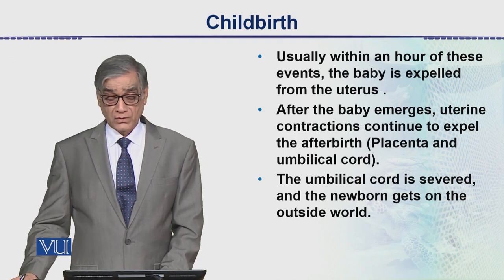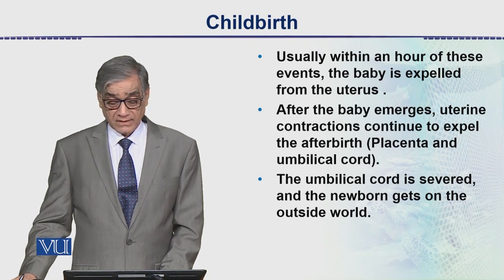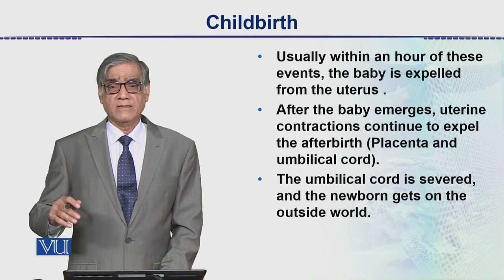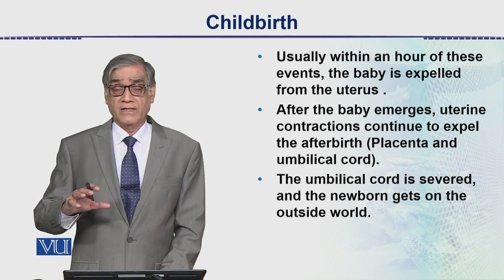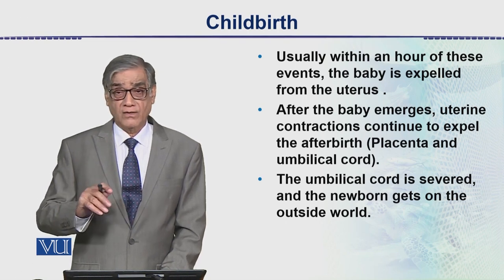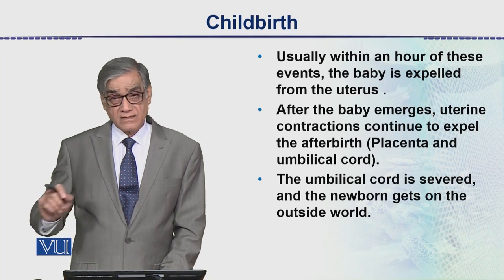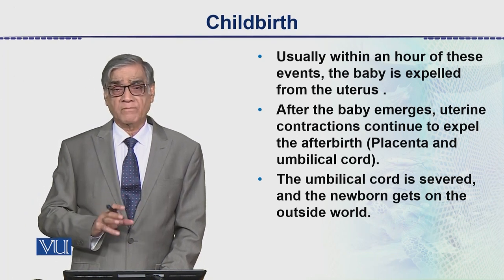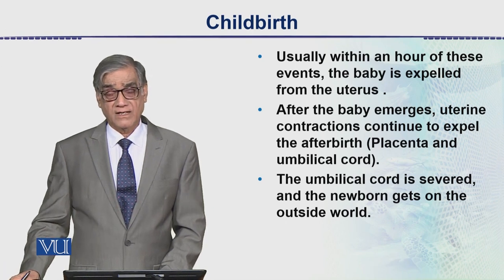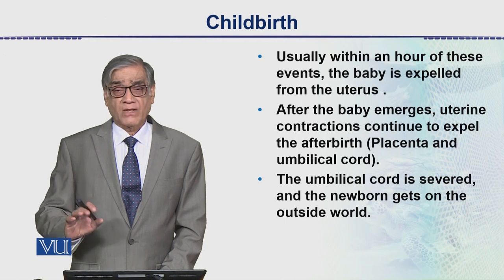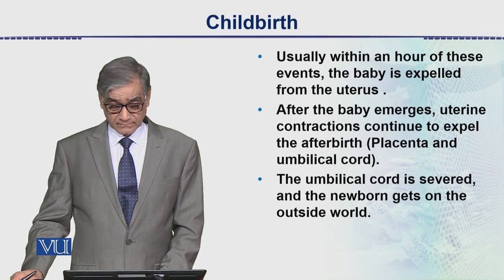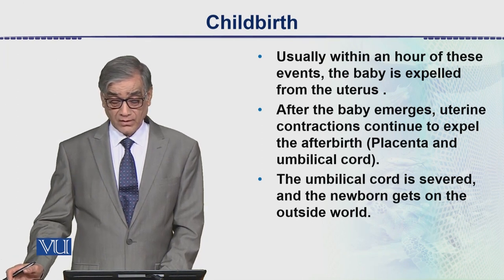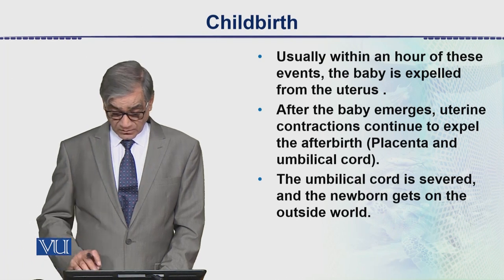Uterine contractions continue to expel the afterbirth. When the baby comes out of the body, the placenta is still inside. The umbilical cord also comes out with the baby attached to it. Clips are placed on the cord in the middle, and then the umbilical cord is cut and tied, so the baby gets separated from the mother.